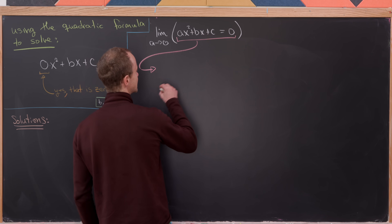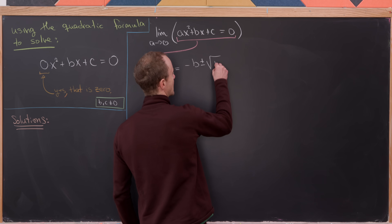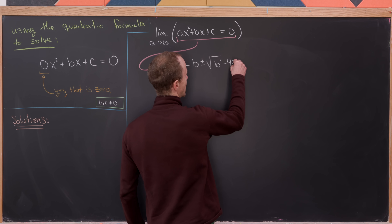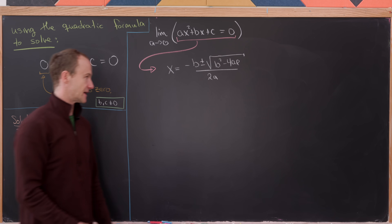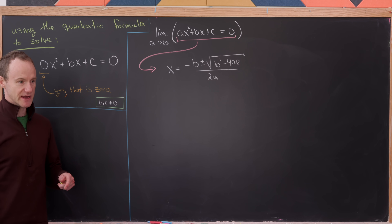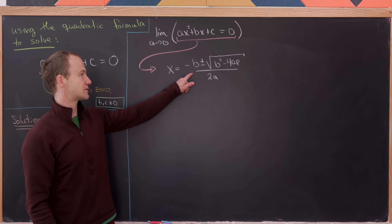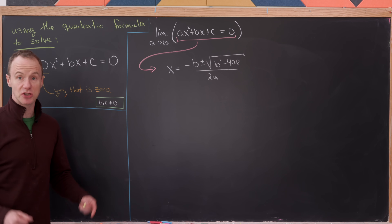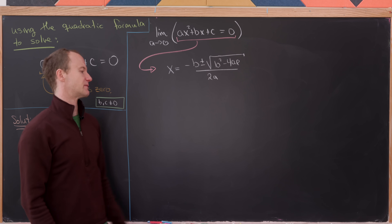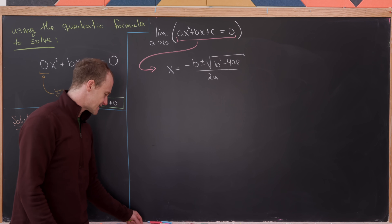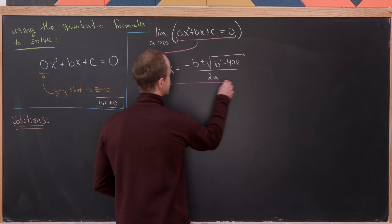The solution to this is x equals negative b plus or minus the square root of b² minus 4ac, all over 2a. What we'd like to do now is take the limit of this expression with a approaching 0. Notice we've got a plus-minus here, so we're going to separate it out into two cases.